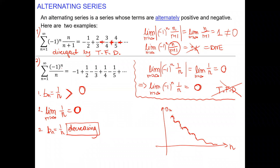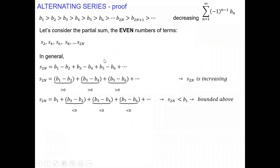Before we do this, let's look at a proof. You don't have to know how to repeat the proof, but it would be nice to understand it. All the terms are listed, and I'm claiming they are decreasing — only looking at b sub n, not the alternation. I have two parts of this proof: I focus on the even number of terms (partial sums S₂, S₄, S₆, adding even numbers of terms) and the odd number of terms.